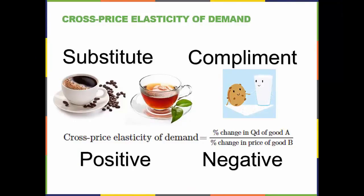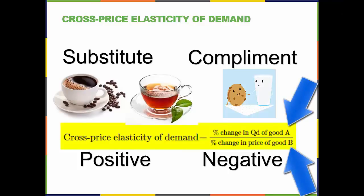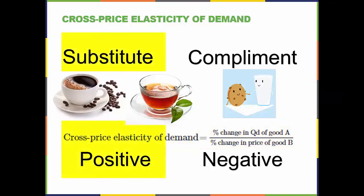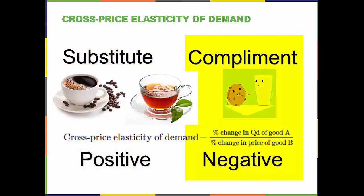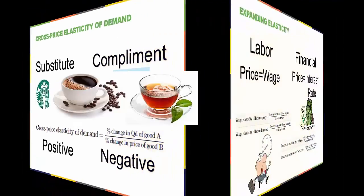What if we wanted to know if two products or services were substitutes or complements? Cross-price elasticity of demand is the tool economists use to determine the relationship between the price of one product and the quantity demanded of another. The equation is calculated the same as other elasticity coefficients, except we use the quantity of one product in the numerator and the price of another in the denominator. Substitute goods have positive cross-price elasticities of demand — if good A is a substitute for good B, like coffee and tea, a higher price for B will mean a greater quantity consumed of A. Complement goods have a negative cross-price elasticity — if good A is a complement for good B, like milk and cookies, a higher price for B will mean a lower quantity consumed of A.